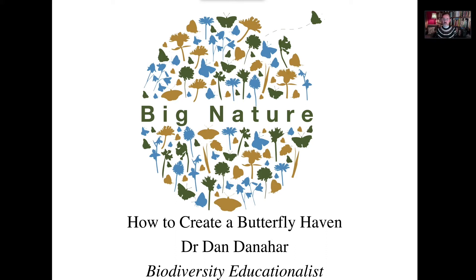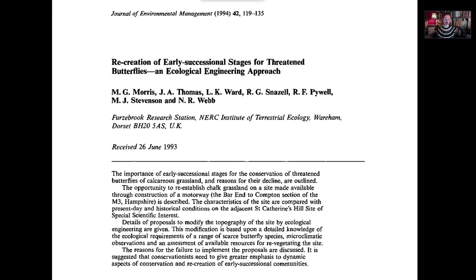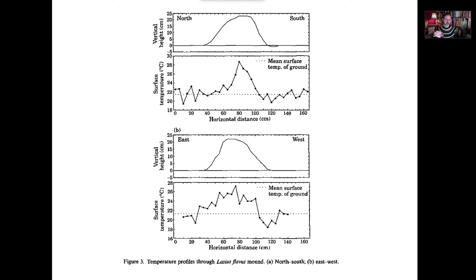Unless you start putting some of that habitat back. I first got into this idea when I read a paper in the journal Environmental Management in 1994 by Morris et al., which looked at an ecological engineering approach to this problem. They looked at an anthill and realised that microclimate could be manipulated by the topography of the anthill.